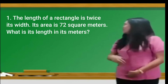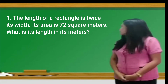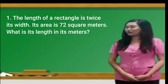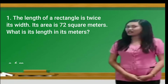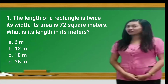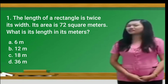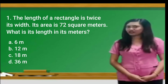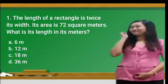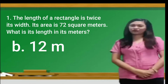Number 1: The length of a rectangle is twice its width. Its area is about 72 square meters. What is its length in meters? A. 6 meters. B. 12 meters. C. 18 meters. Or D. 36 meters. The correct answer is D — wait, the answer is B, 12 meters.